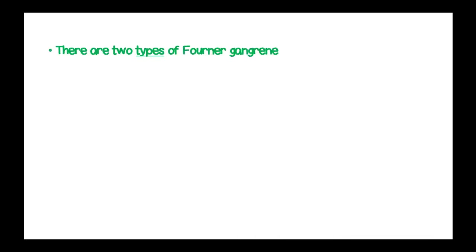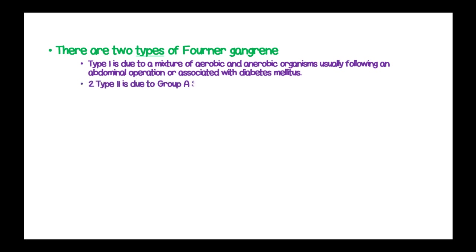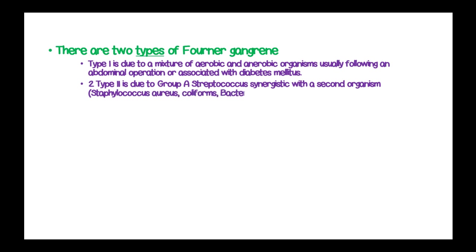There are two types of Fournier's gangrene. Type 1 is due to a mixture of aerobic and anaerobic organisms, usually following an abdominal operation or associated with diabetes mellitus. Type 2 is due to group A Streptococcus synergizing with a second organism such as Staphylococcus aureus, coliforms, or bacterial species.